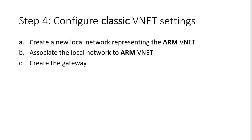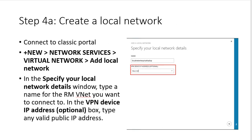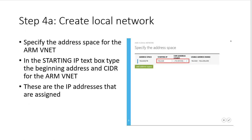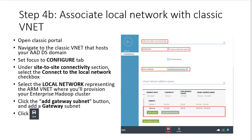We will configure the classic VNet portal, the ARM VNet, and then we need the gateway — create the gateway, new network surface, virtual network, the local network, and then specify your local details. We said VPN peering is easier than VPN, but with VPN you can specify the IP address and the options available with it, then specify the ARM VNet and the starting IP and the ending IP for the CIDR. We associate the local network with the classic VNet and then side-to-side connectivity, so that will allow us to use a VPN to speak between the two VNets via a gateway.